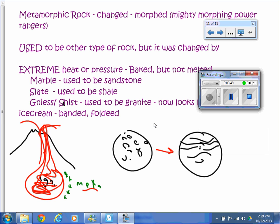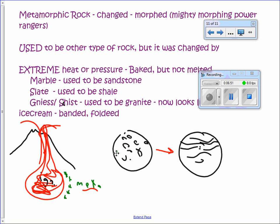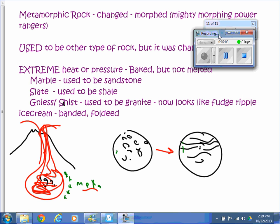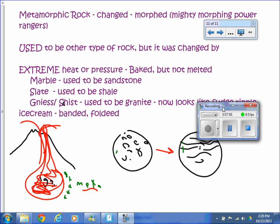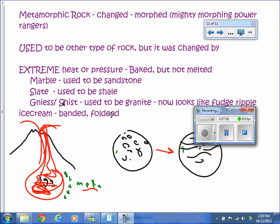Schist is a rock type we see around here quite a bit. The granite starts out with large visible crystals, then undergoes extreme pressure and ends up looking all wavy. Those wavy rocks — I think they look like fudge ripple ice cream — are described as banded, folded, or foliated. That's what metamorphic rock looks like.